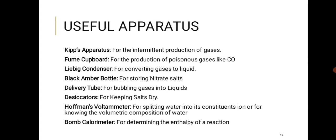Also: the desiccator for keeping salts dry; the Hoffmann voltameter for splitting water into its constituent ions or determining the volumetric composition of water — also used in electrolysis of water; and the bomb calorimeter for determining the temperature of a reaction. If light reaches nitrate salts they start decomposing, so store them in black amber bottles that light cannot pass through.